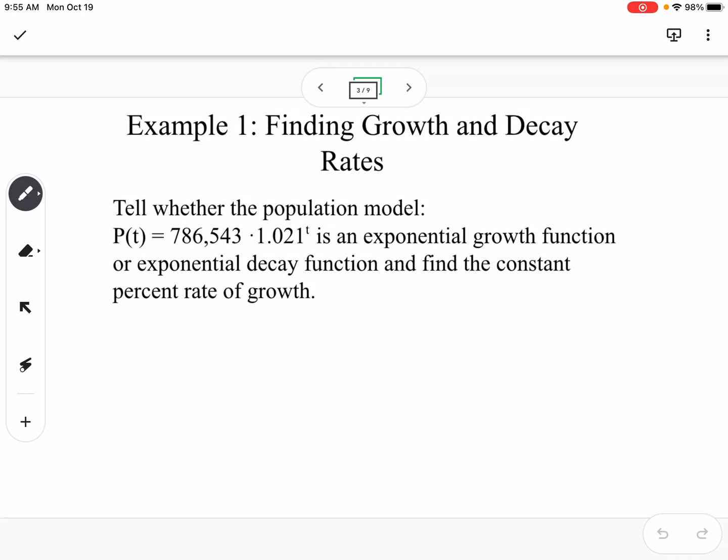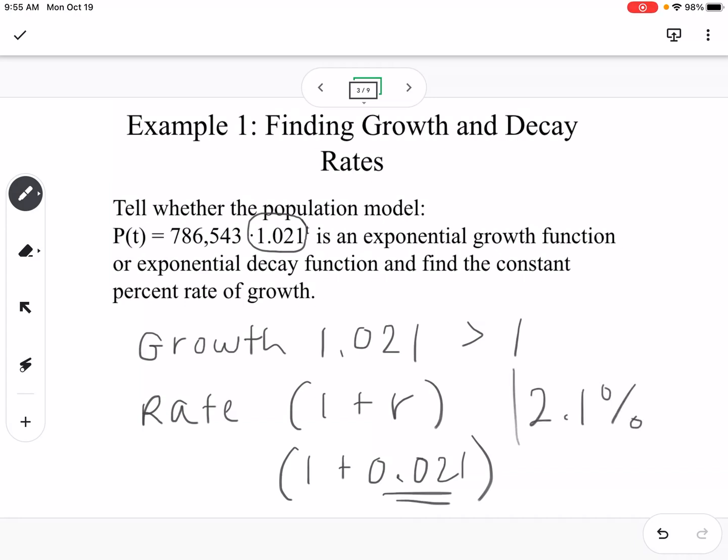This would be growth because our B value is 1.021, which is greater than 1. If your B value is greater than 1, it's going to be growth. If it's less than 1, it's going to be decay. Our rate, that B value is 1 plus R, so this would be 1 plus 0.021. So that means our rate is 0.021 written as a decimal, which would be a 2.1% growth rate.